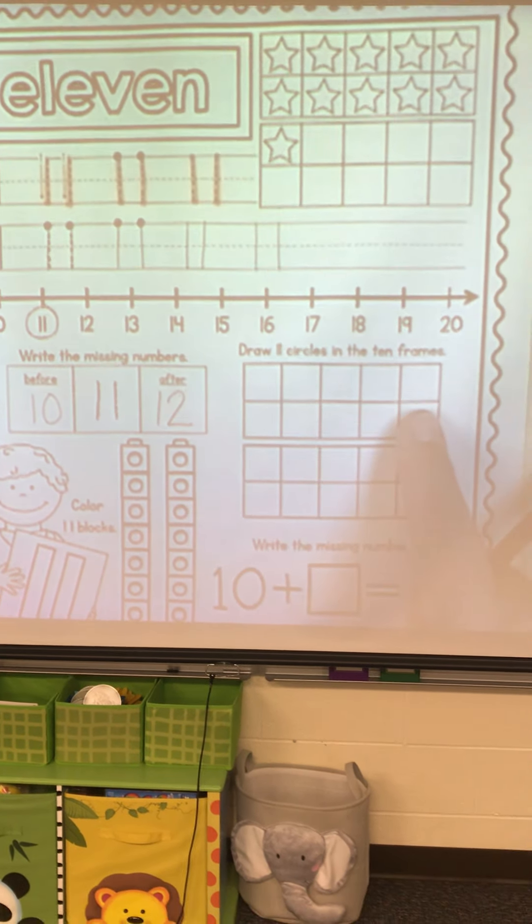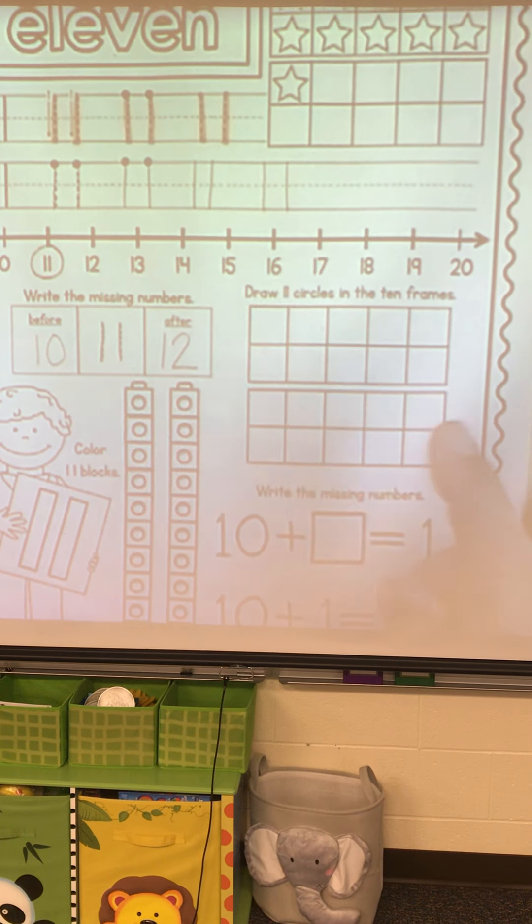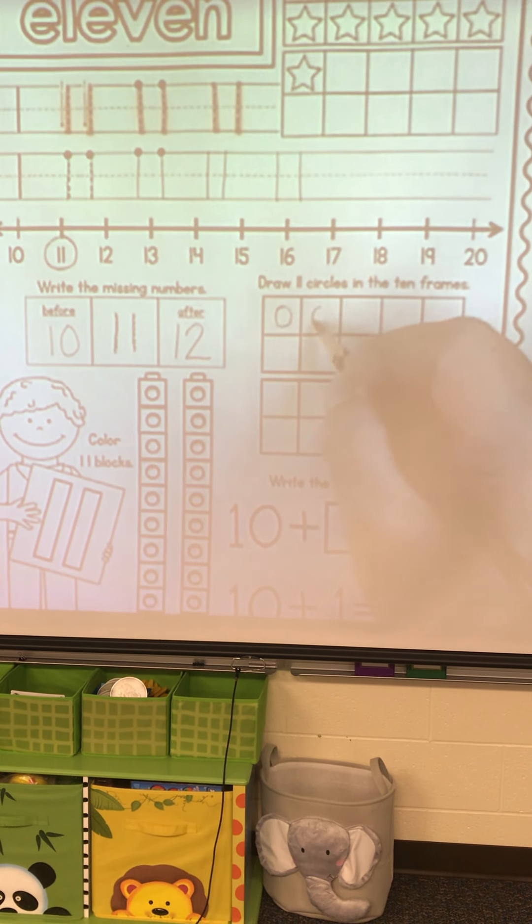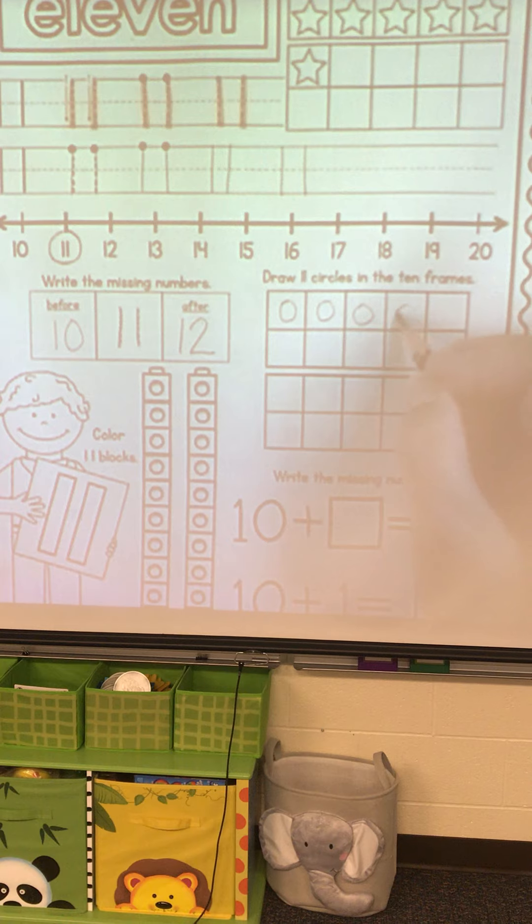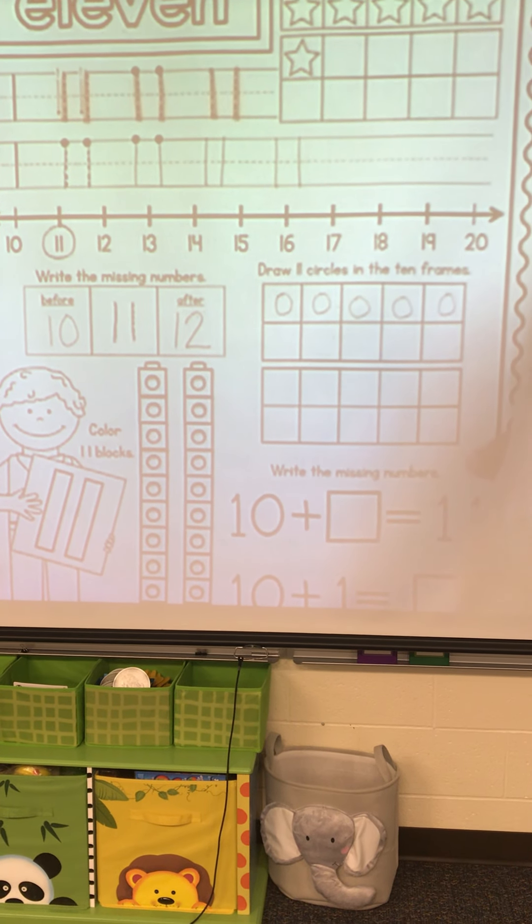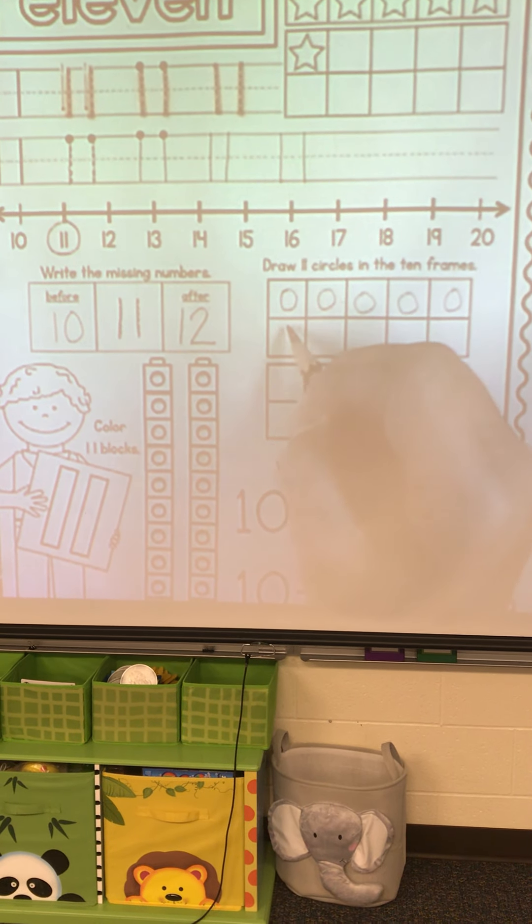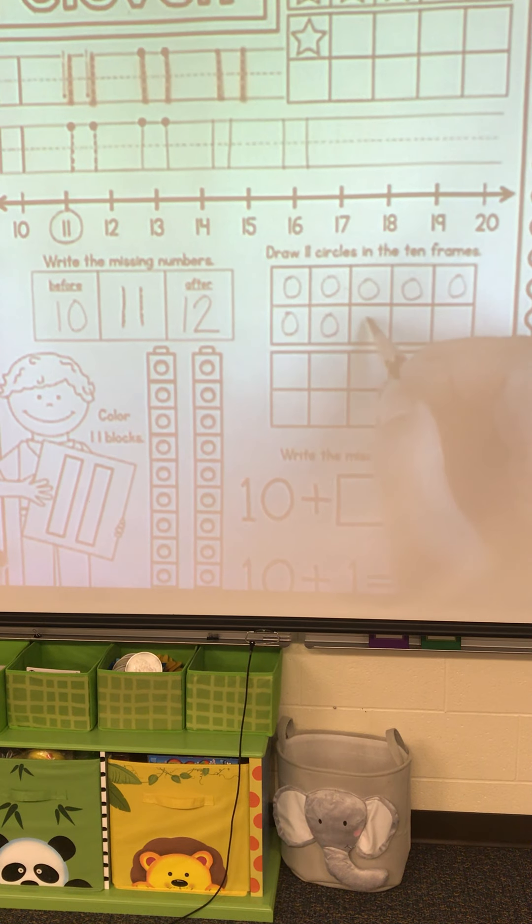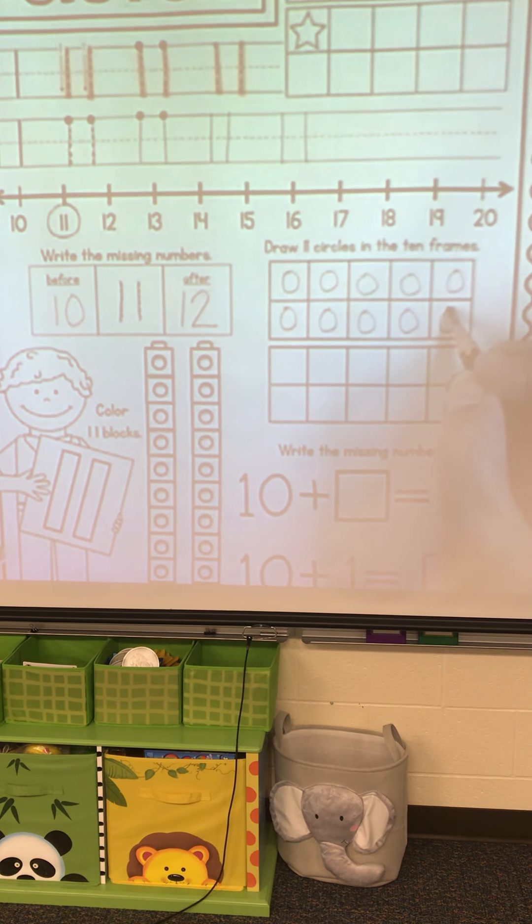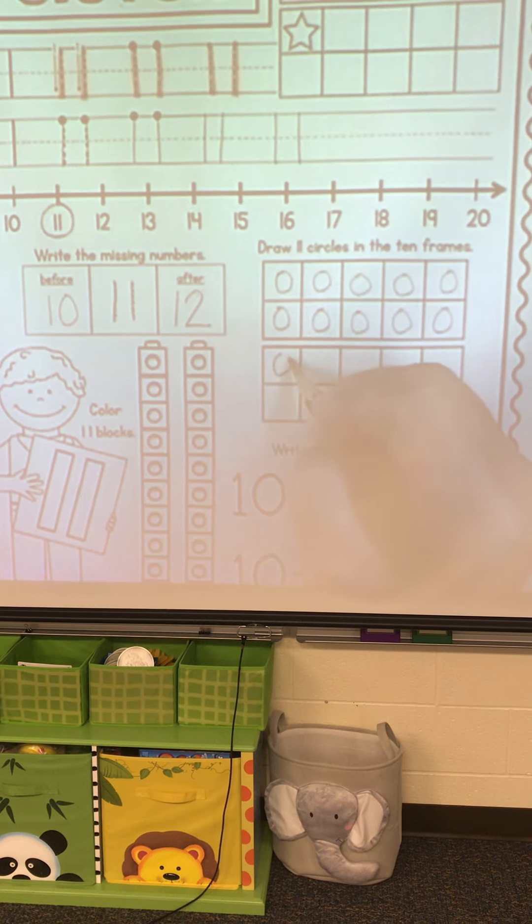Okay, you draw 11 circles in the 10-frame. We go 1, 2, 3, 4, 5. Then we have to go back: 6, 7, 8, 9, 10. Then we have to go back: 11.